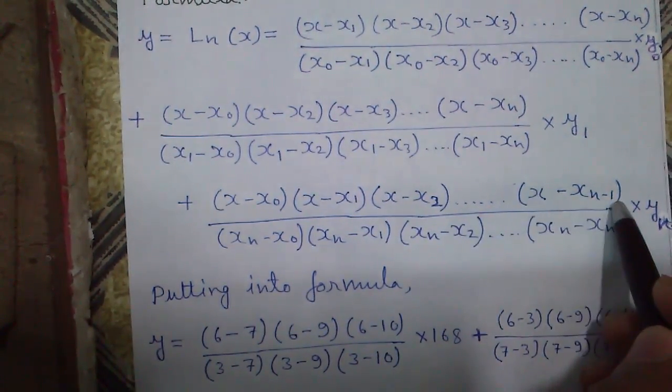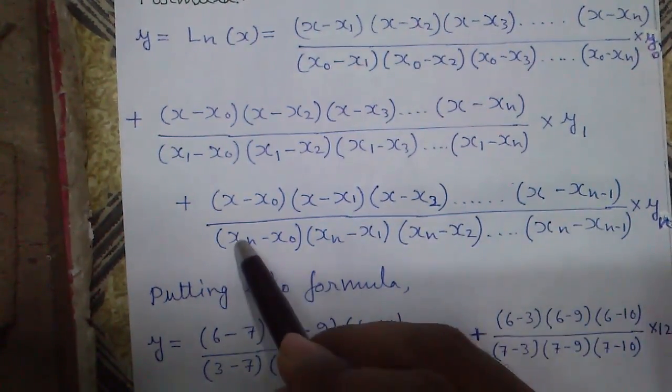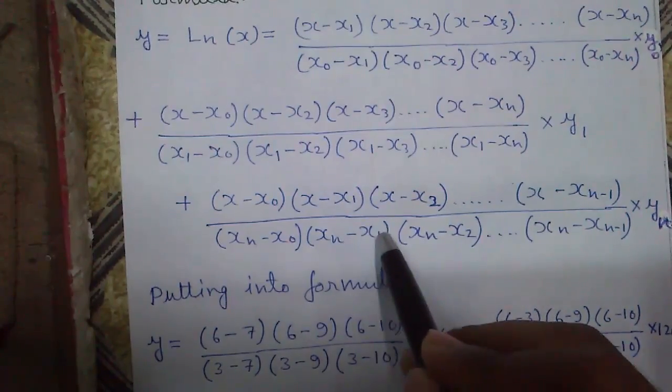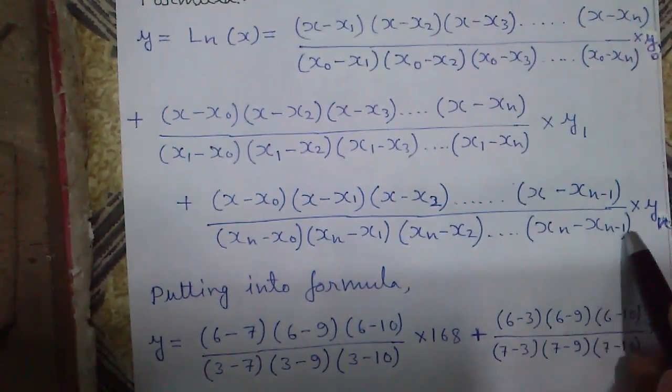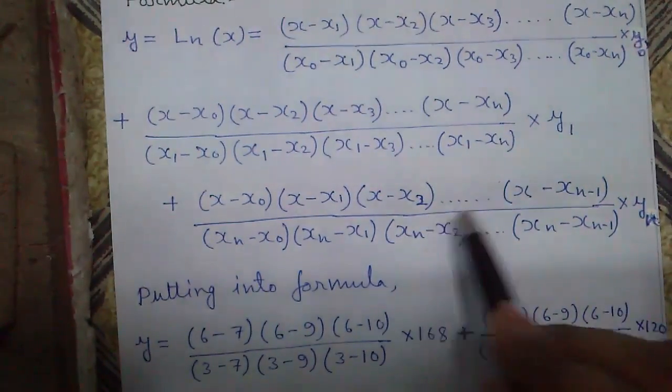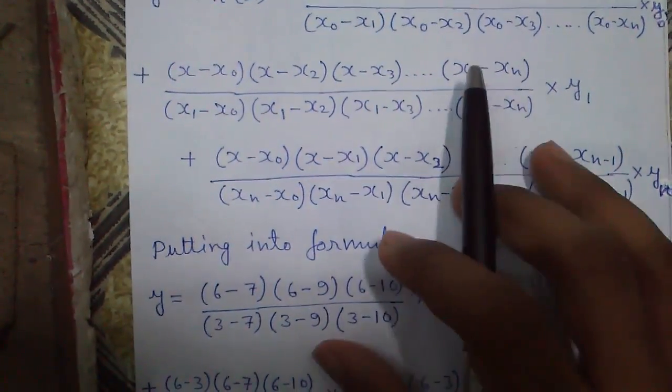x minus xn minus 1, the term before the last term. Since xn is missing here, so xn minus x0, xn minus x1, xn minus x2, going on xn minus xn minus 1 times yn. Don't get confused by the formula, see the example so we will understand.